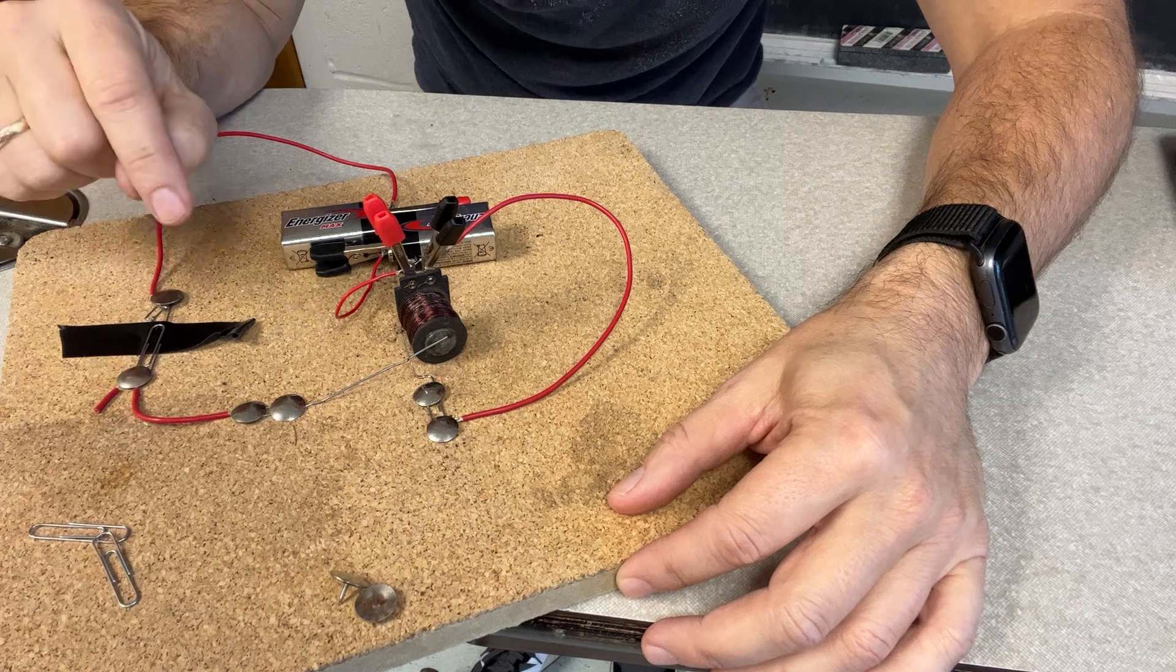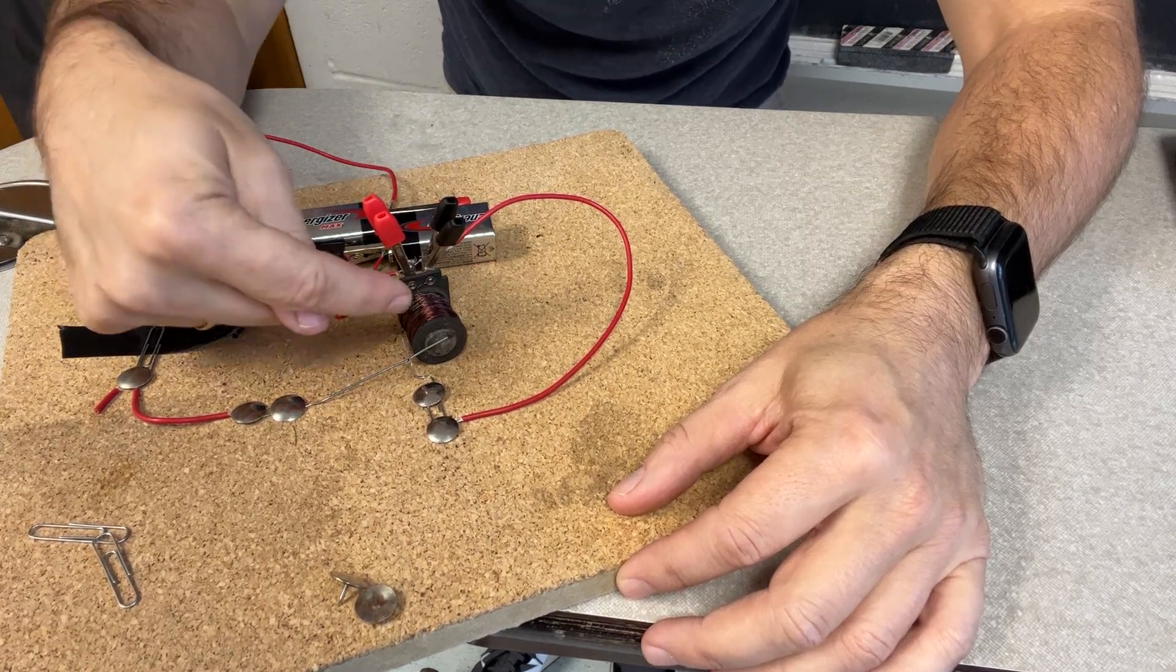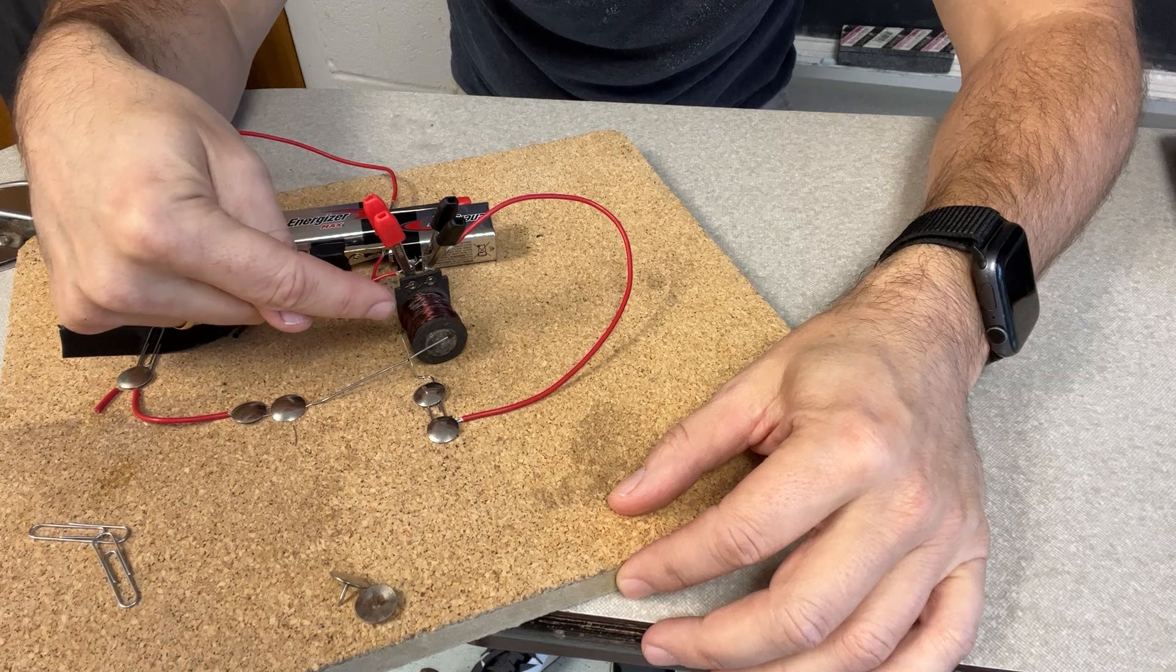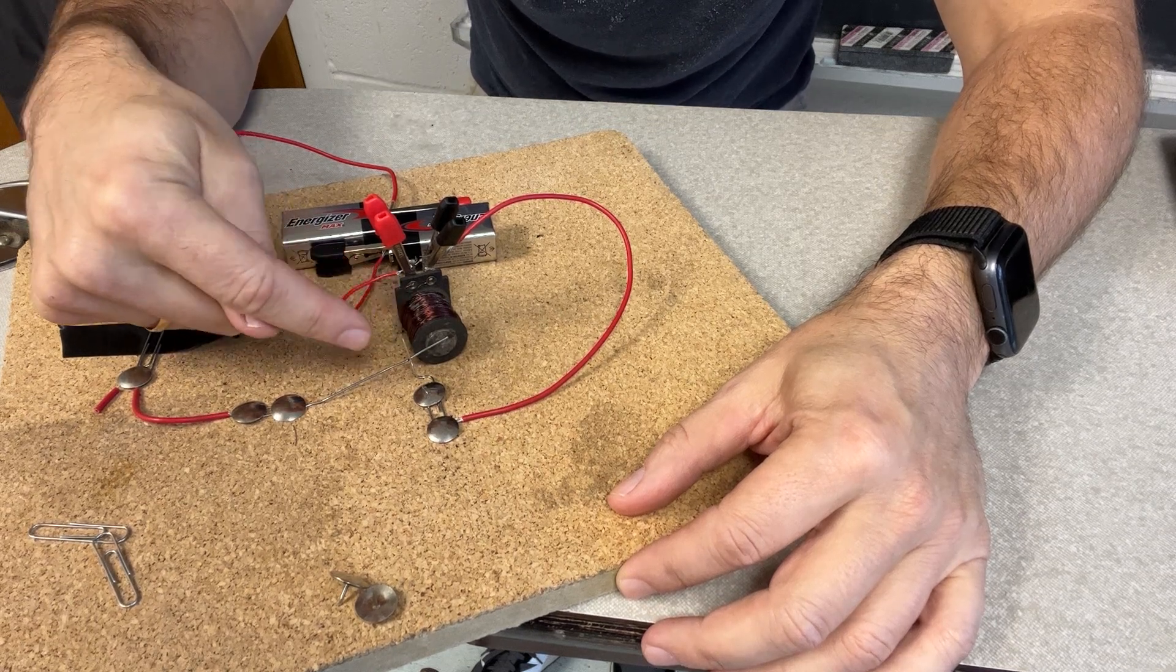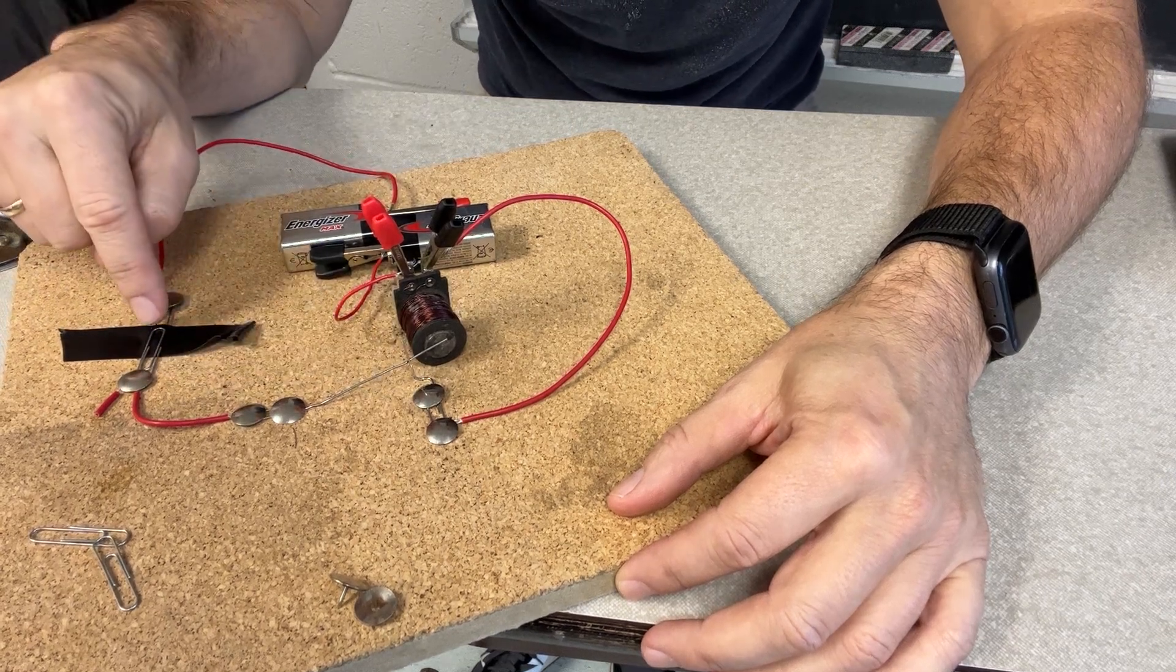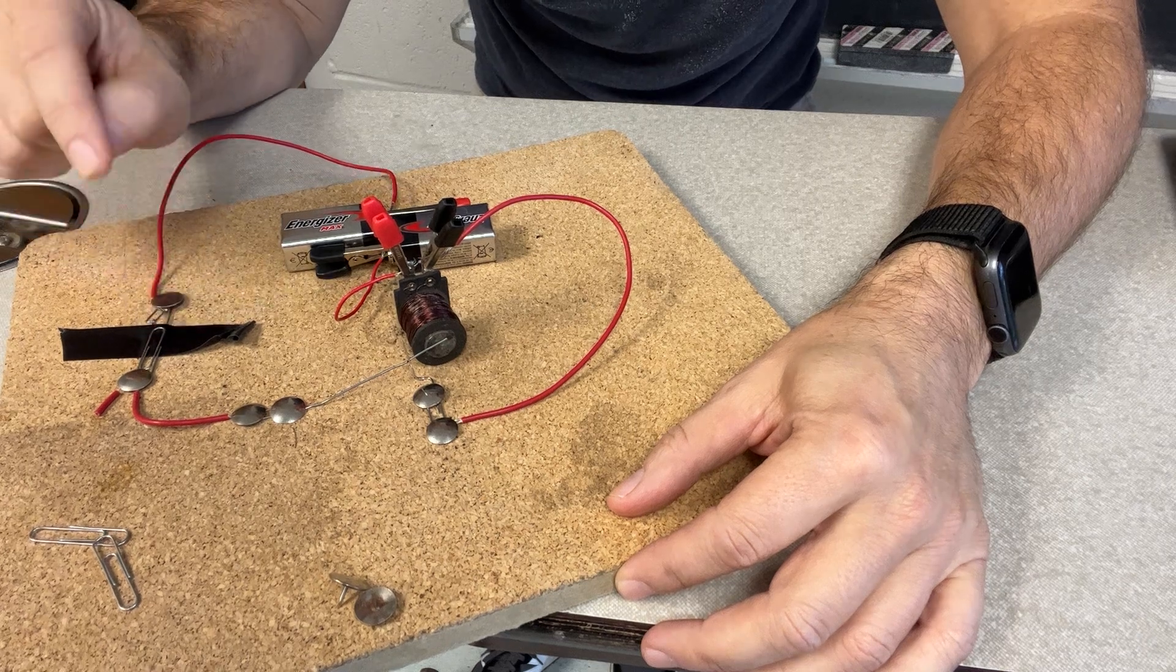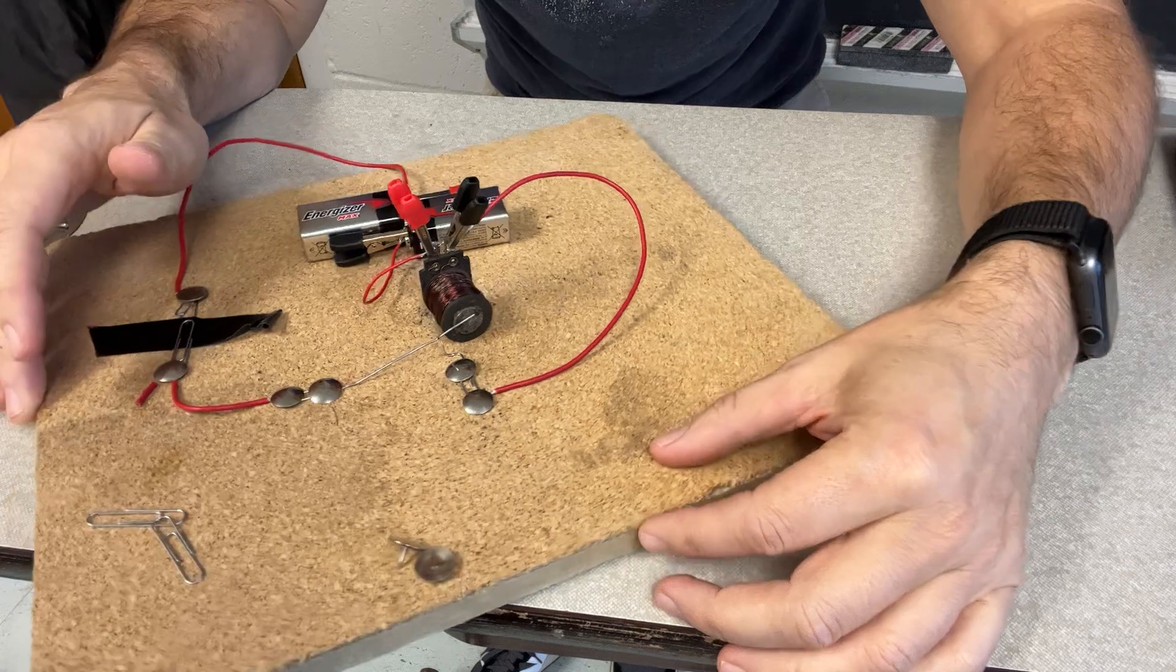So pretty easy to build. I took this coil of wire from something, but you could make one on your own. Put an iron core in there to make it stronger, and then just kind of play with this until you can get it to barely move away. It's kind of fun, it's an easy build.